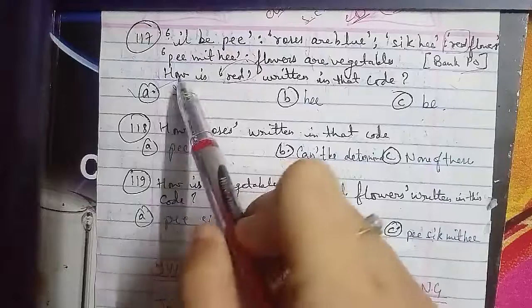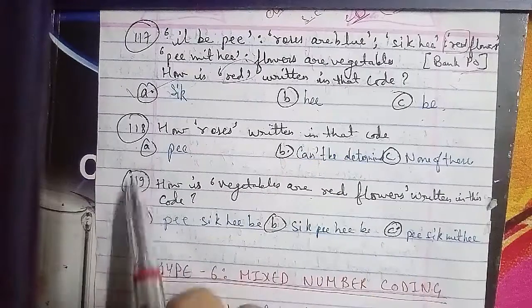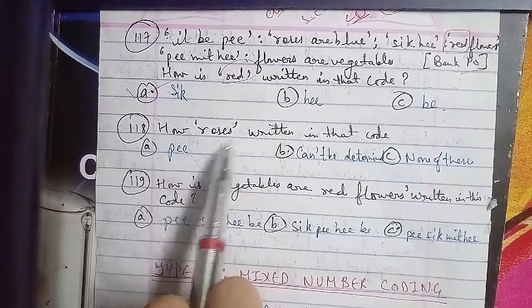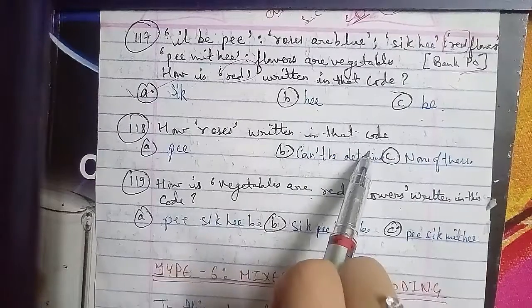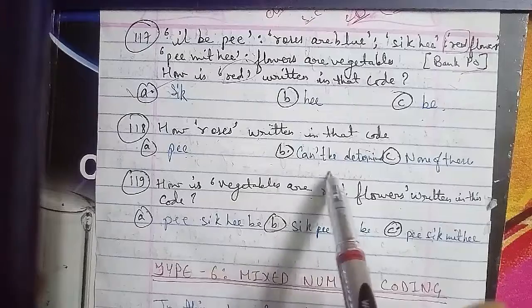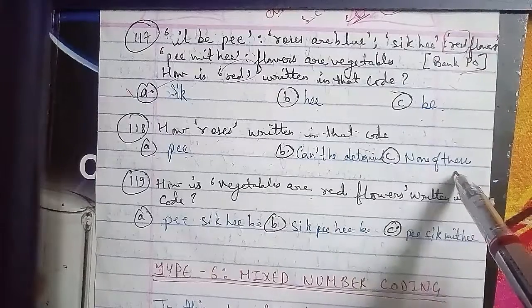Moving on with question number 118: How is roses written in that code? Options are A is p, B is can't be determined, and C is none of these. For roses, roses appears in one place only and not elsewhere.